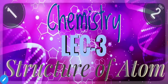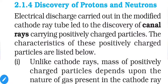We will also discuss atomic models. For the discovery of protons and neutrons, we used a slightly modified version of the cathode ray tube already used for electrons. This leads to the discovery of canal rays, which carry positively charged particles. Earlier we obtained negatively charged particles; now we are getting positively charged particles.